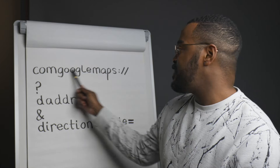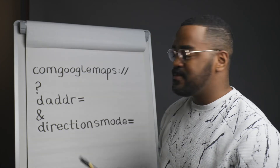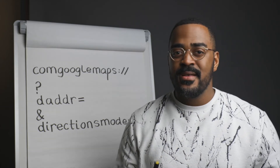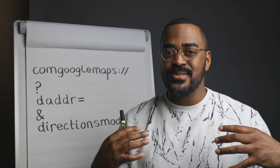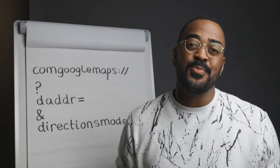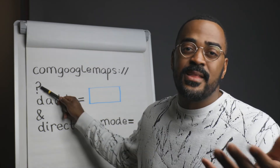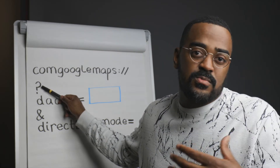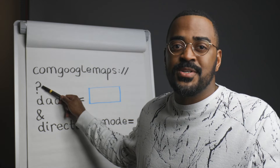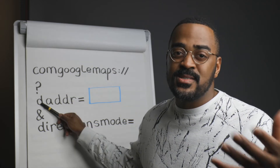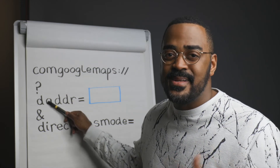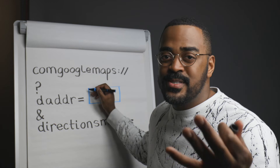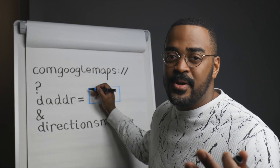This top line — comgooglemaps colon slash slash — tells our iPhone to open the Google Maps app. The second line, the question mark, signals to Google that we're going to ask a question. In this context the question is: how do I get to my destination address? Here's where the voice input for our app goes.